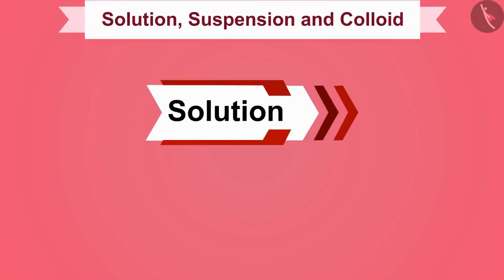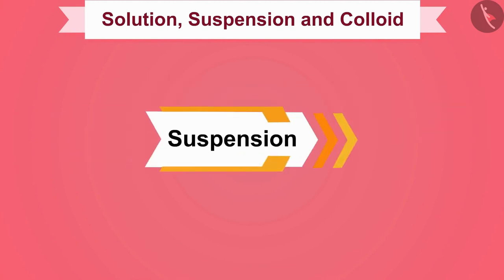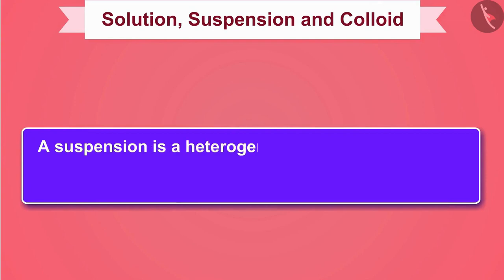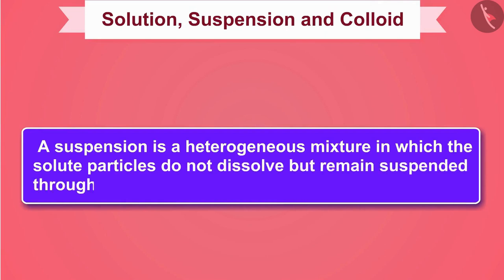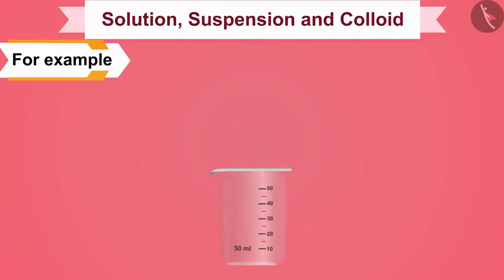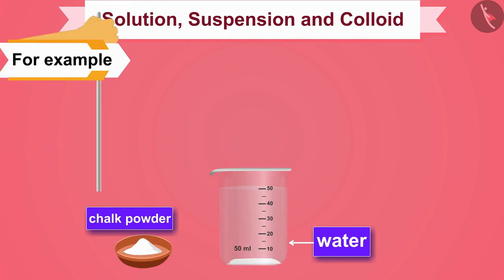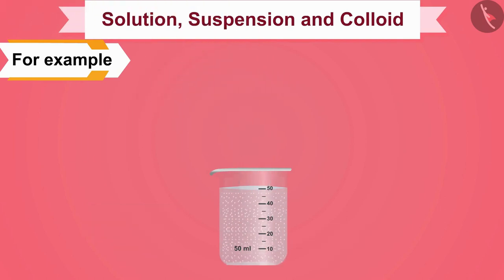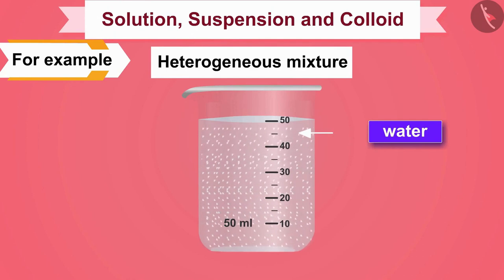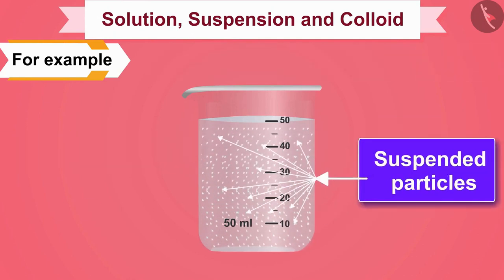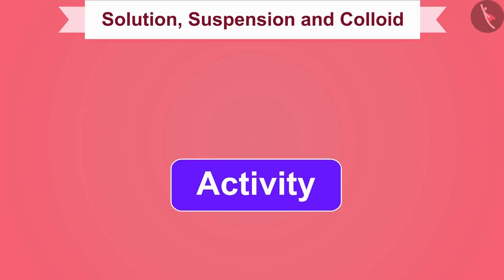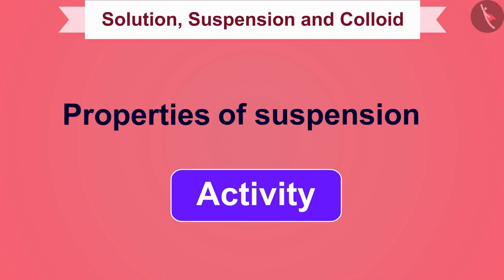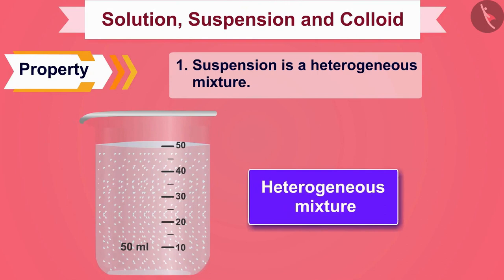Now that we have learned about solutions, let us learn about suspension. A suspension is a heterogeneous mixture in which the solute particles do not dissolve but remain suspended throughout the bulk of the medium. For example, take 50 ml of water in a beaker and dissolve one teaspoon of chalk powder with a glass rod. This mixture is heterogeneous — the solute does not dissolve but remains suspended. Suspension is a heterogeneous mixture.